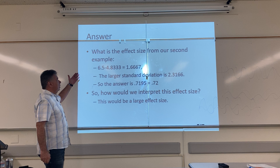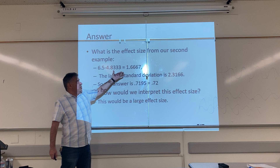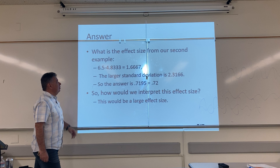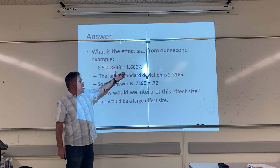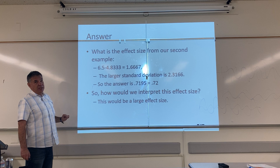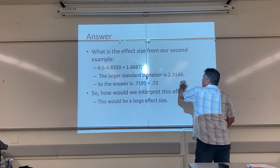The answer for the numerator part is the same answer we got from the numerator part in our T formula: 1.667. But previously we got a negative answer — we took the absolute value of it. So I took the bigger mean minus the smaller mean. Then we found the larger variance and took the square root of it, so the larger standard deviation is 2.3116.